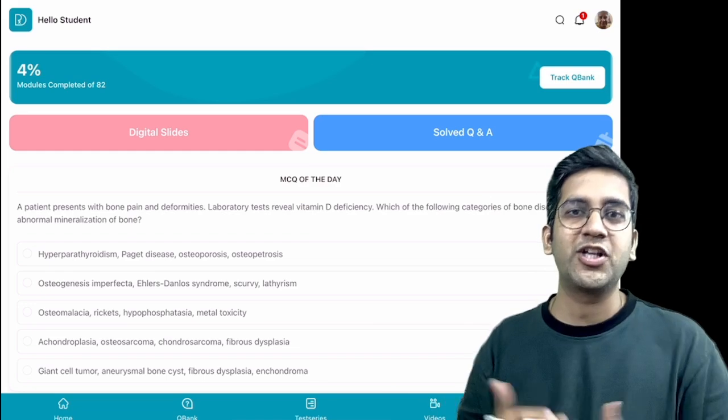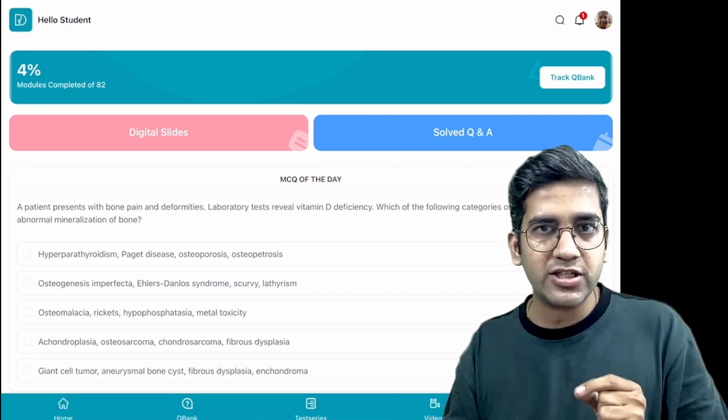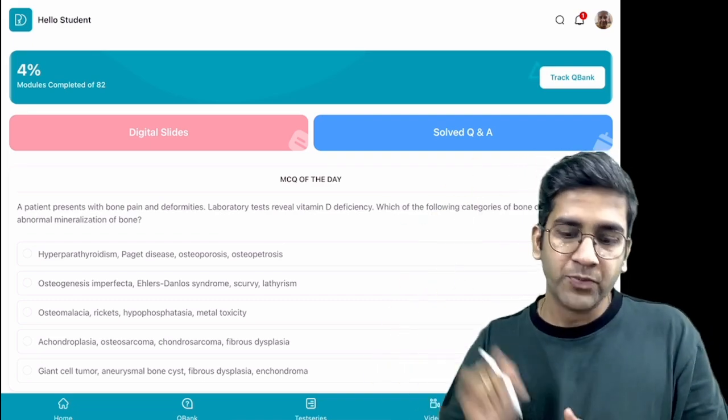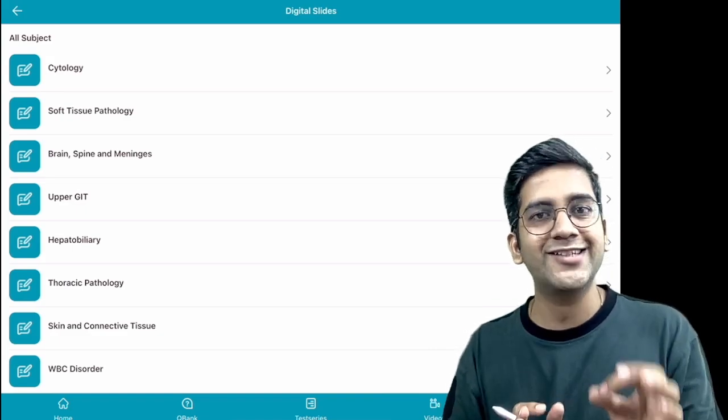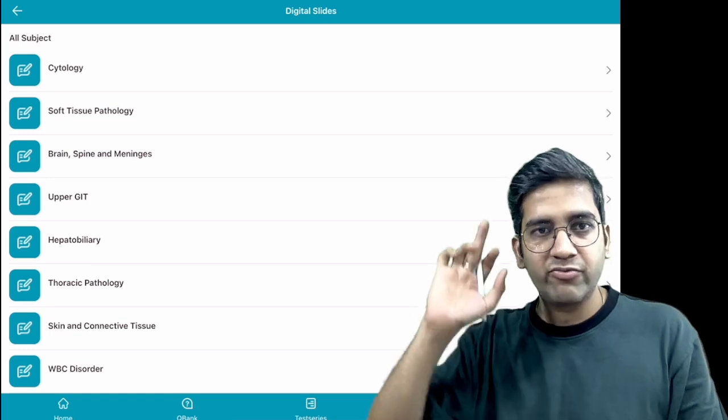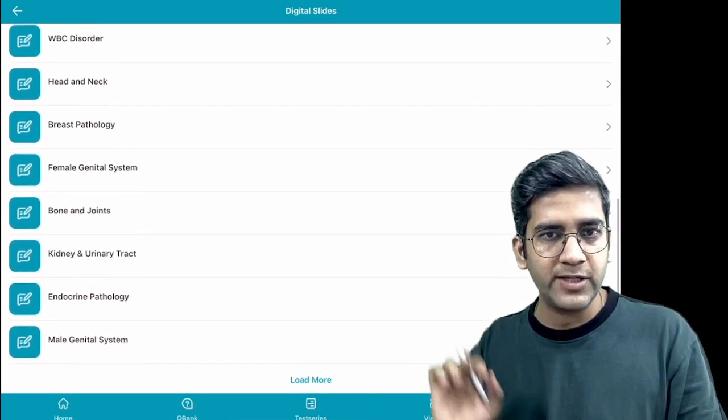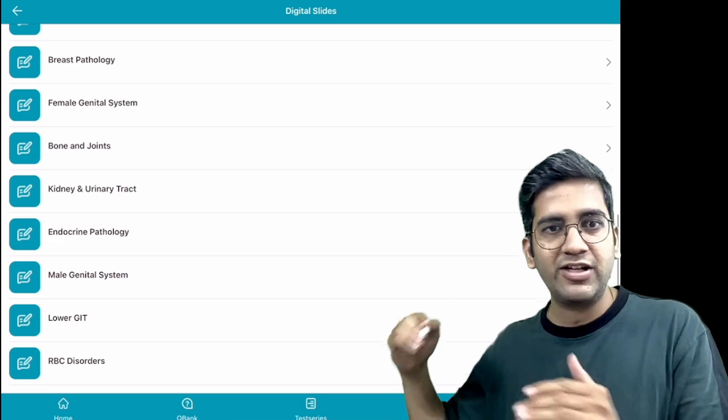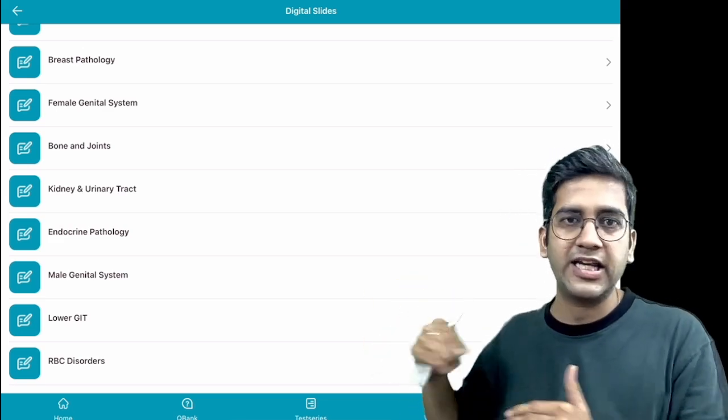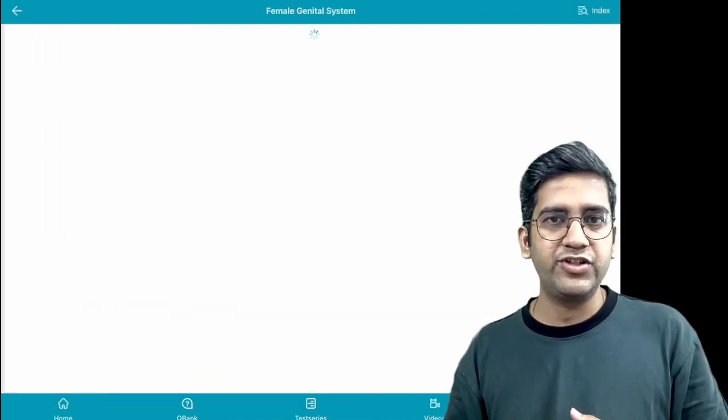Then I have two entry points: one called Digital Slides, the other called Solved Q&A. Once you click Digital Slides, you'll have everything required to learn. It's a self-learning tool categorized system-wise: cytology, soft tissue, head and neck, and all those things. You can load more, including lower GI and RBC disorders.